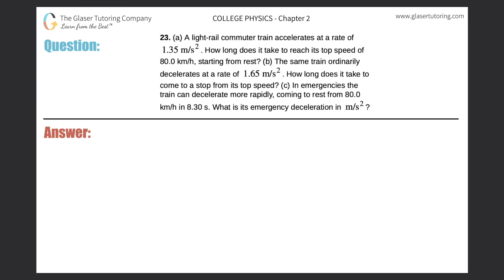Number 23, letter A. A light rail commuter train accelerates at a rate of 1.35 meters per second squared. How long does it take to reach its top speed of 80 kilometers per hour starting from rest? Let's sketch a quick picture — the dot is the train, moving forward. It starts from rest, so its initial velocity must be zero.